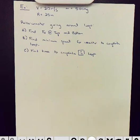Alright guys, here's another example. We have a roller coaster going around the loop. It has a speed of 20 meters per second. The loop's radius is 25 meters and the roller coaster has a mass of 500 kilograms. I'd like to find the normal force at the top and bottom of the loop on the roller coaster. I want to find the minimum speed that the roller coaster can go and still complete the loop. And then I'd like to find the total time it would take the roller coaster to complete one loop.